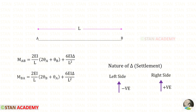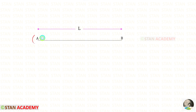If the upward settlement occurs on the left side, that is at point A, the settlement will be negative. And if it occurs on the right side, that is at point B, the settlement will be positive. The ends A and B are free, meaning there is no support. The free end will not give any restraint against rotation, settlement, or deflection.